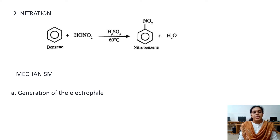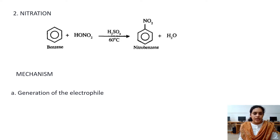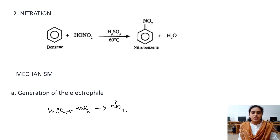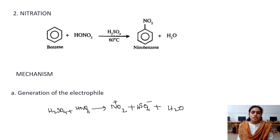The second example is nitration. Benzene undergoes nitration when heated with a nitrating mixture — concentrated nitric acid and concentrated sulfuric acid. In the first step, the electrophile NO2+ is generated: HNO3 + H2SO4 → NO2+ + HSO4- + H2O. The NO2+ is the electrophile.